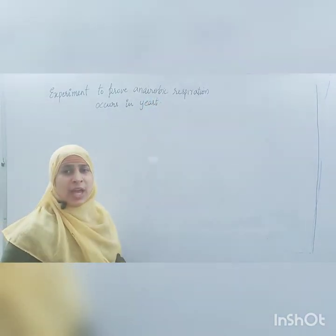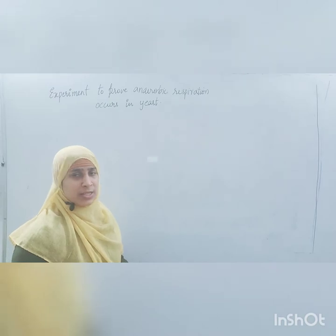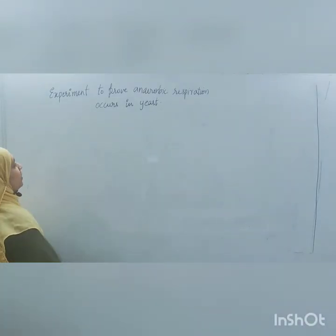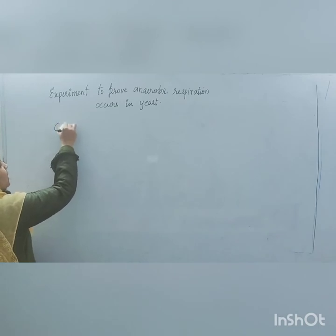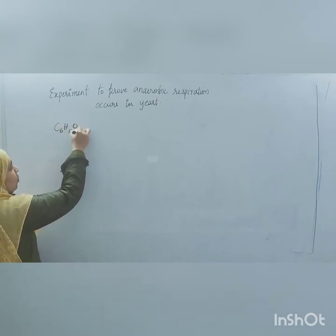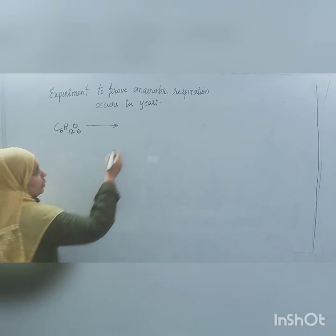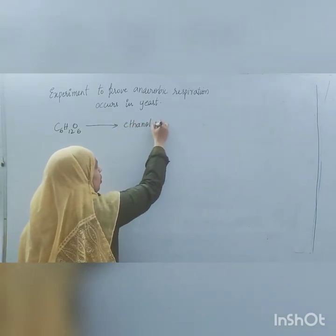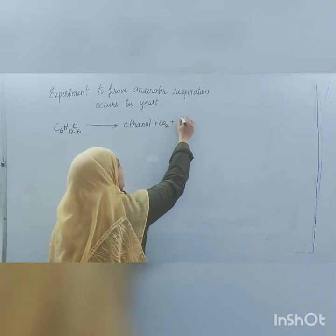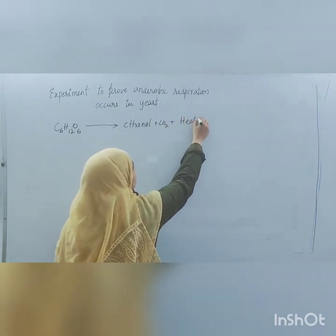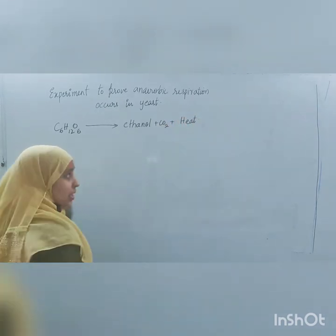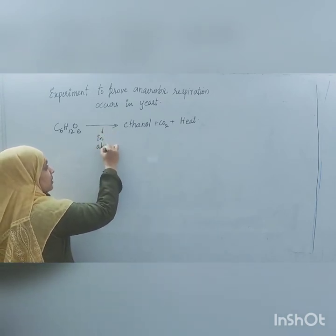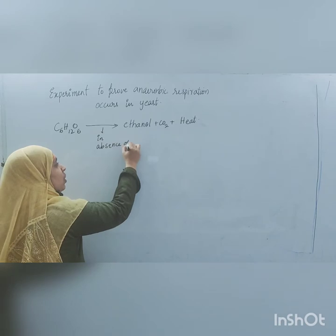To prove that anaerobic respiration occurs in yeast, let us first write the formula. Anaerobic respiration: glucose (C₆H₁₂O₆) converts into ethanol, carbon dioxide, and heat, in the absence of oxygen.